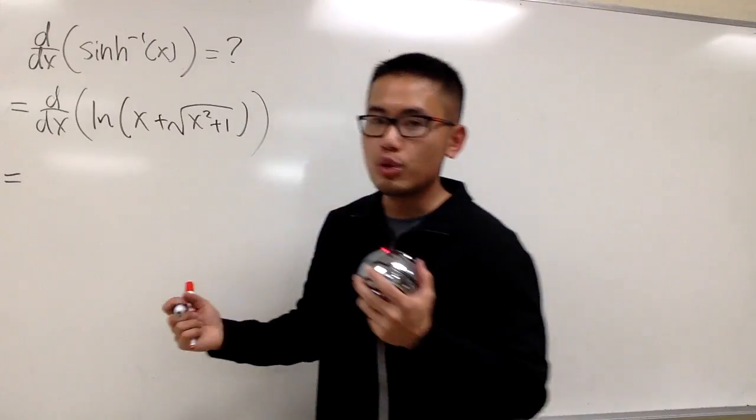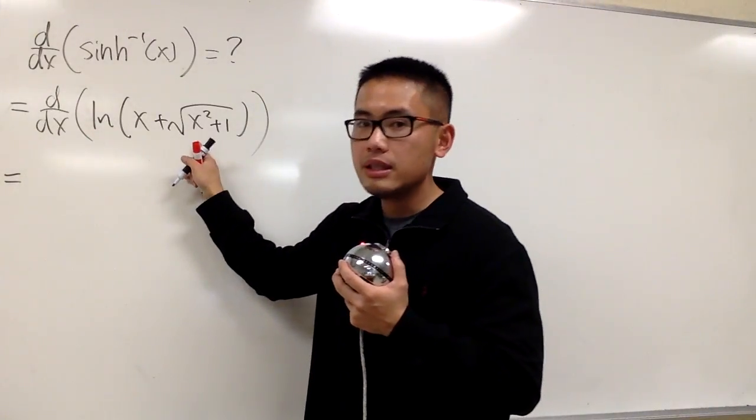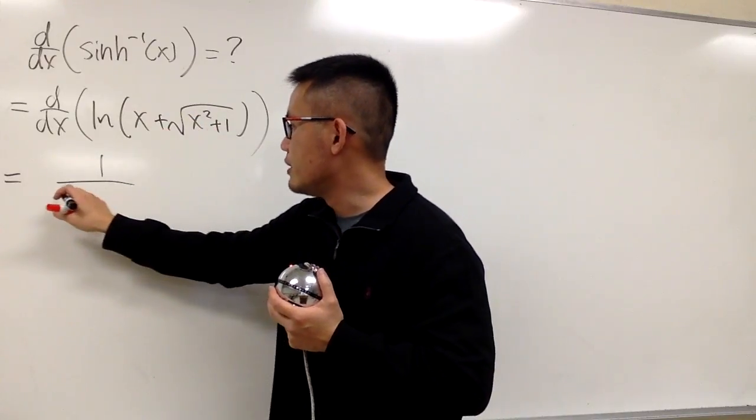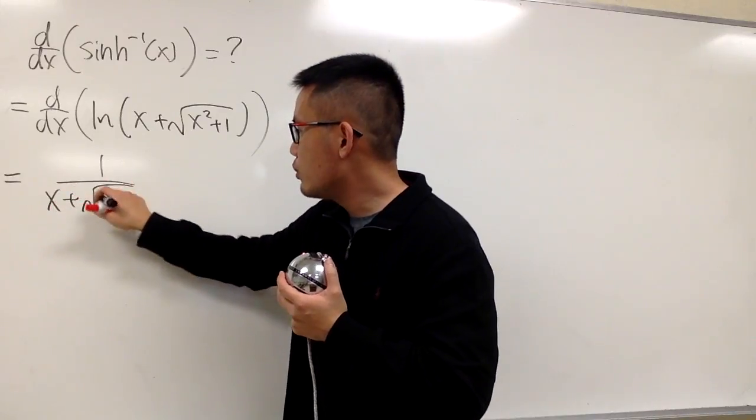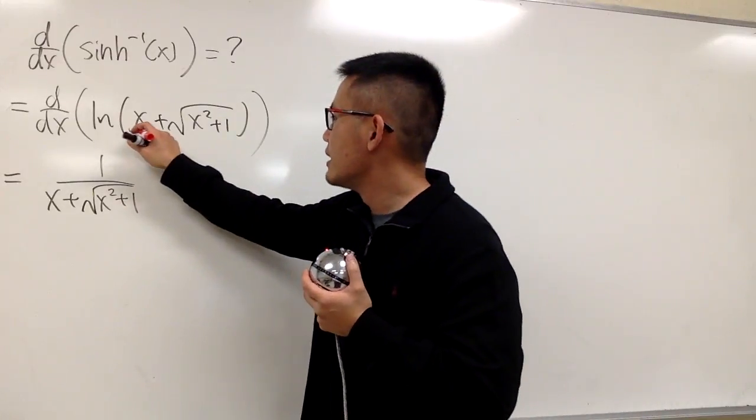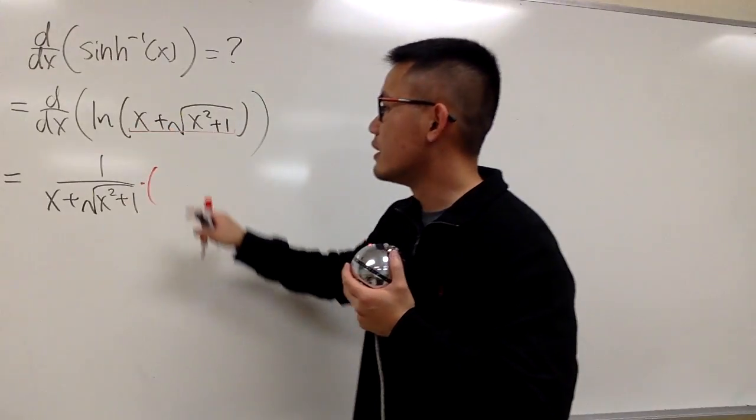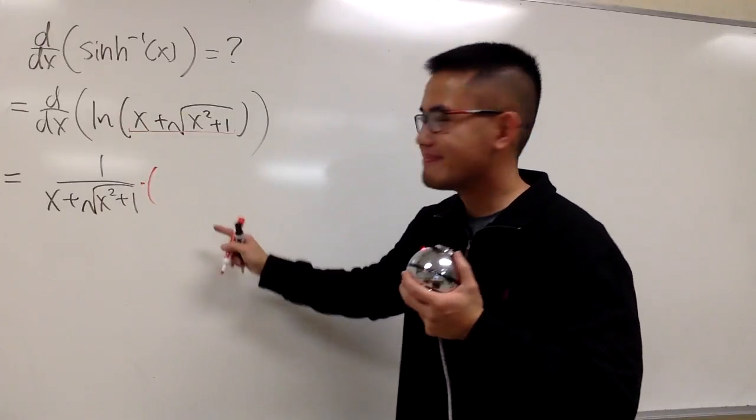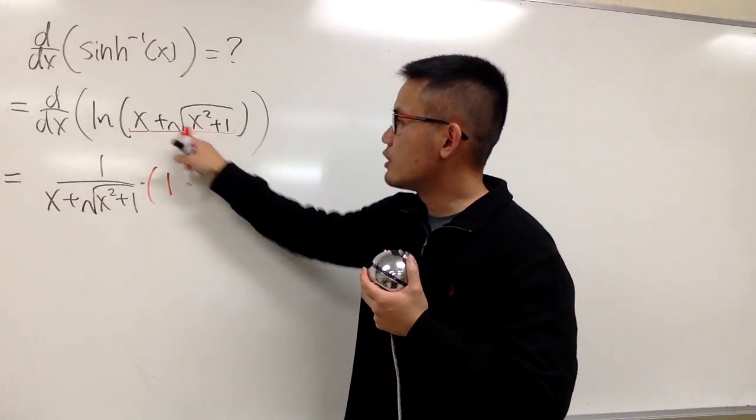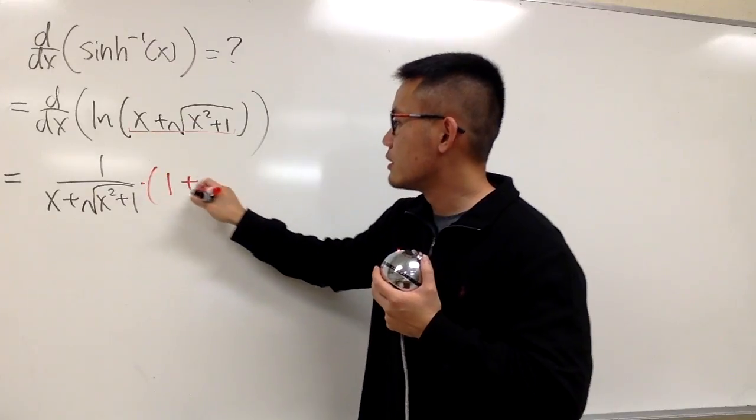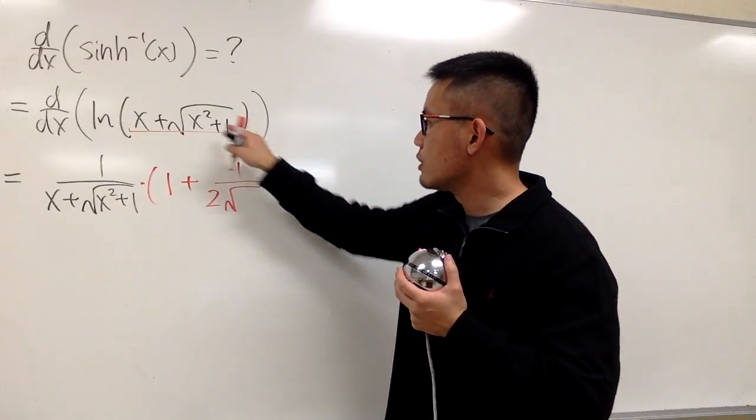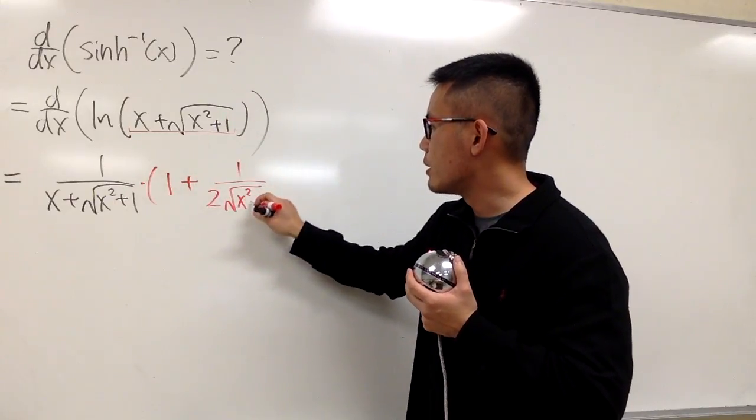Now we can get to work for the derivative. The derivative of ln of something is first 1 over this thing right here. So I'll put this into the denominator, which is x plus square root of x squared plus 1. And then do what? Chain rule. So look at the inside function right here and multiply by the derivative. I have two terms, so that's why I open the parentheses. The derivative of x is just 1. And right here, what's the derivative of square root of something? Let me put down the plus first. The derivative of square root of something is first 1 over 2 square root of the inside, which is x squared plus 1.